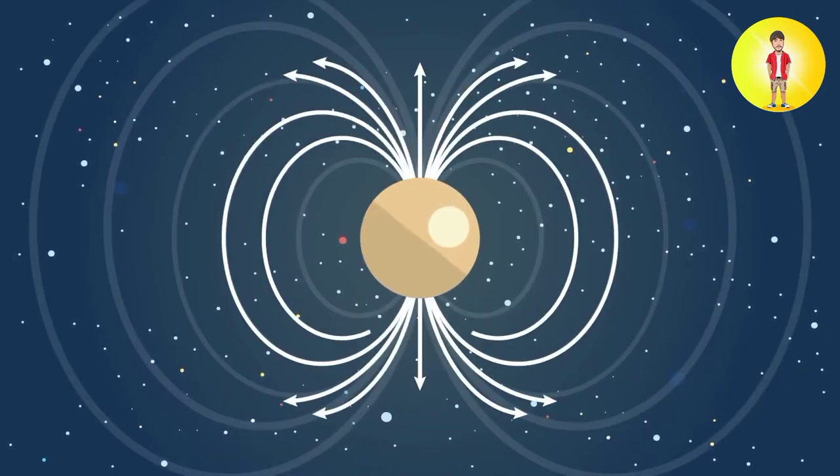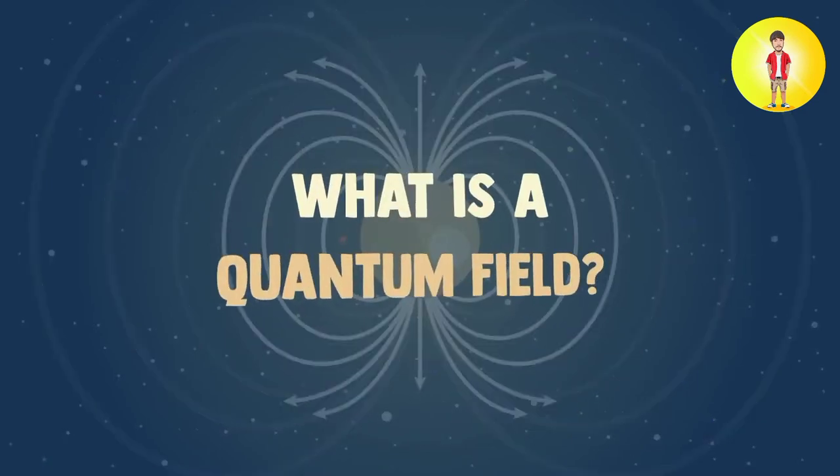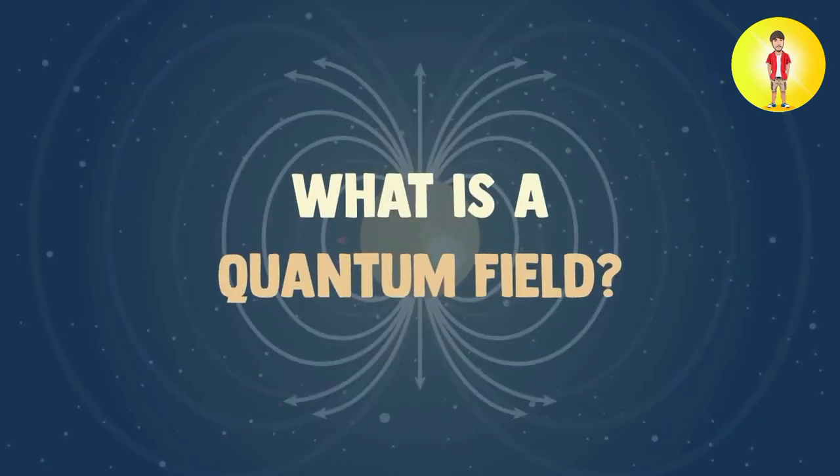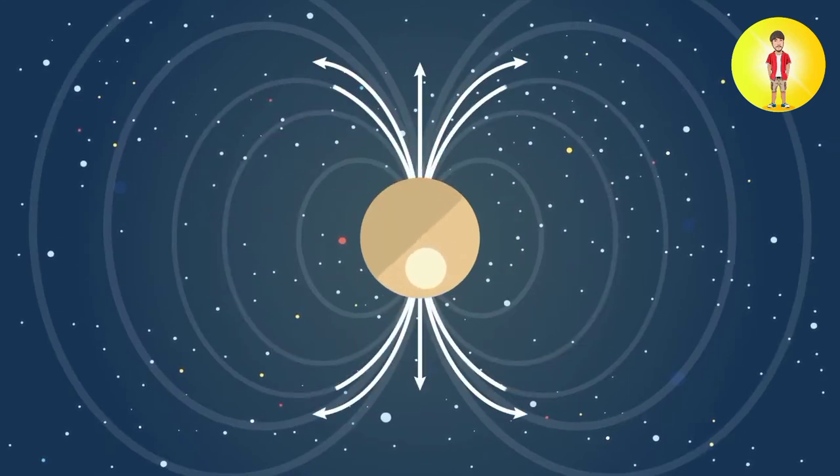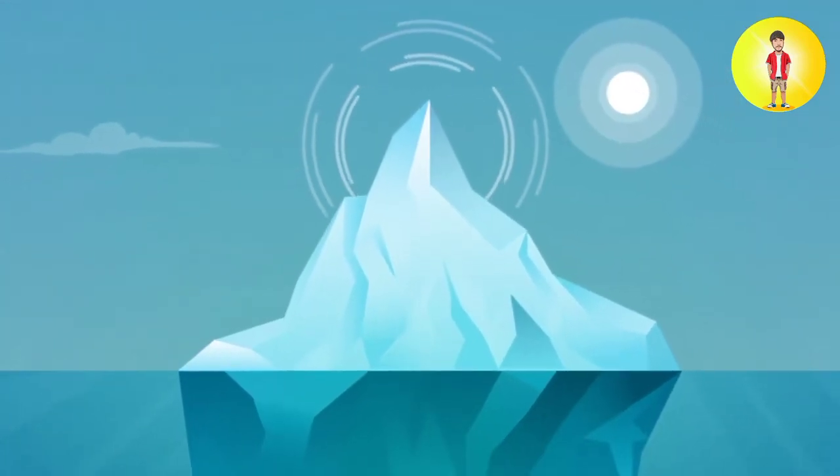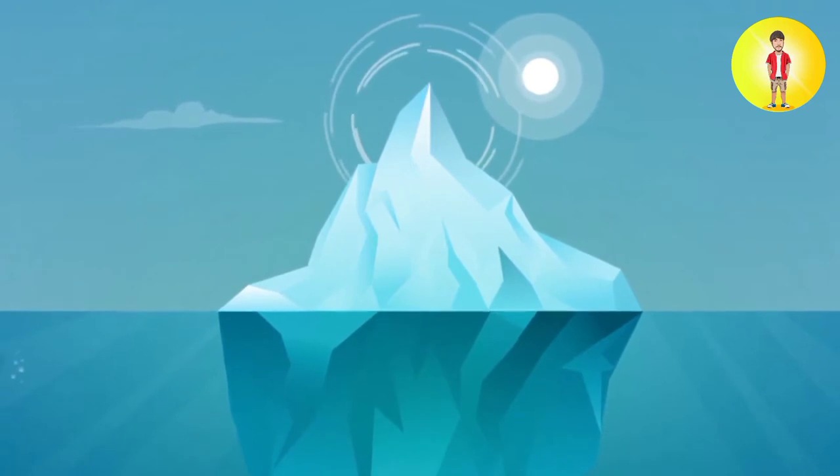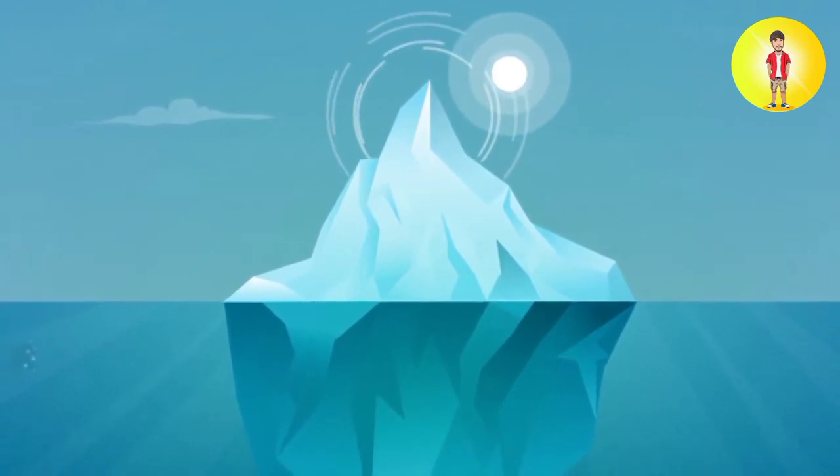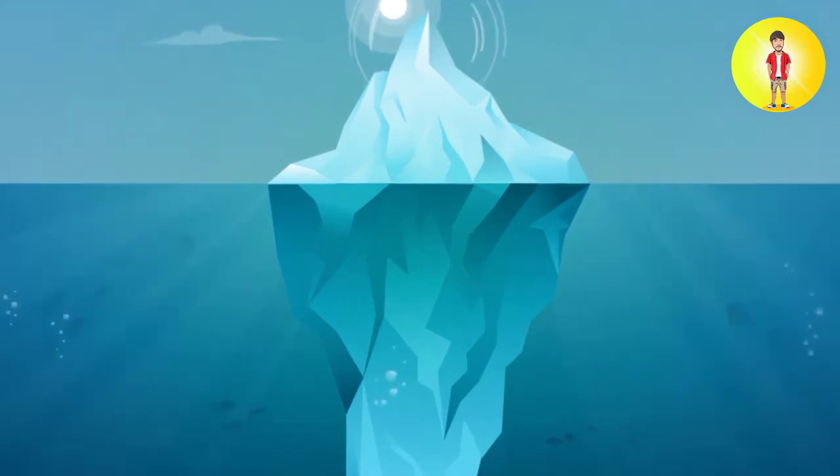This idea is paralleled in quantum physics, in a concept known as the quantum field. So what is the quantum field? The quantum field is basically an electromagnetic field from which all matter materializes. Think of the quantum field as an iceberg. We only see the tip of the iceberg, and in this case, that's our observable reality. However, there is still a huge iceberg hiding underneath the ocean.